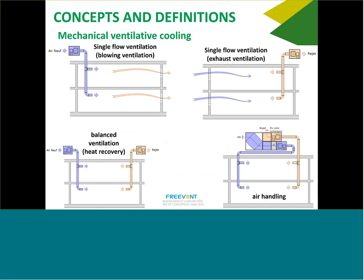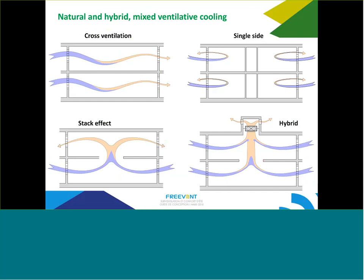I will come back on a few of these items. In mechanical ventilative cooling, you have either supply or exhaust single-flow ventilation, or double-flow balanced ventilation with heat recovery. Because nowadays, at least in France, we can't do balanced ventilation without heat recovery. Of course, when we do ventilative cooling, we need to bypass the heat recovery exchanger. In natural ventilation, you have either cross-ventilation — where you can have a cross-airflow and get the most from the system.